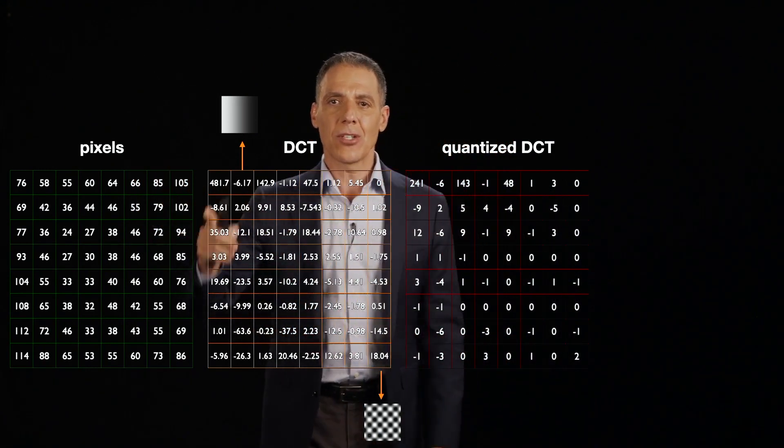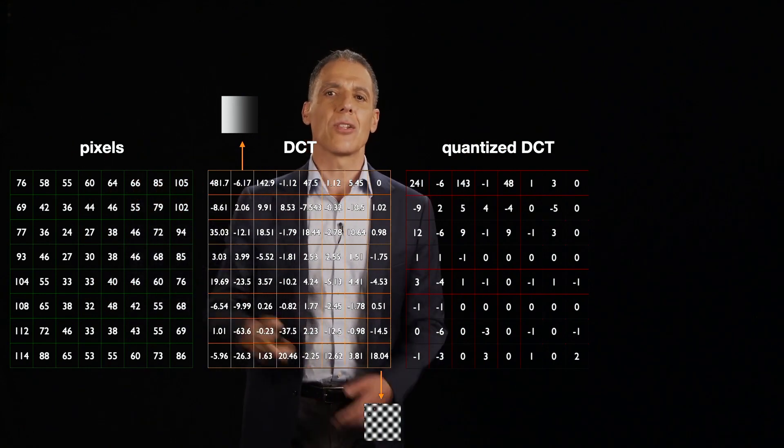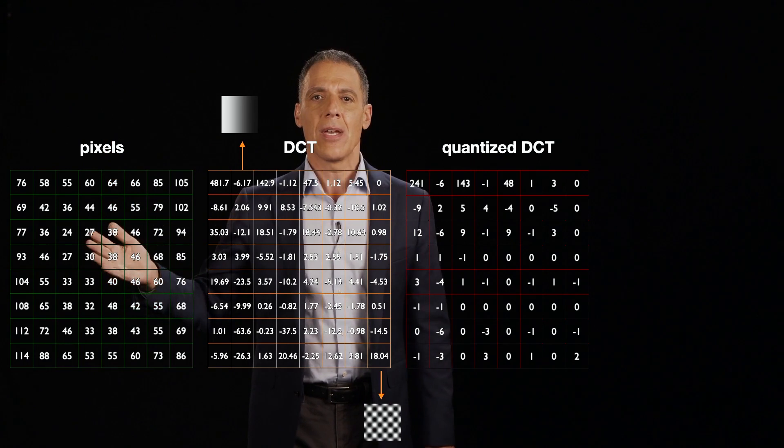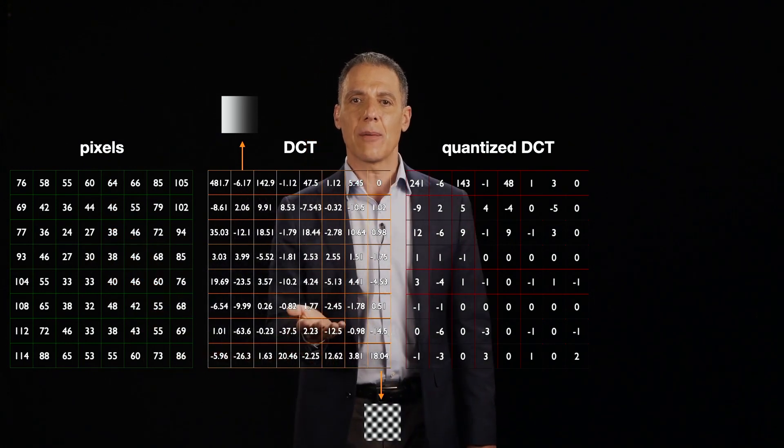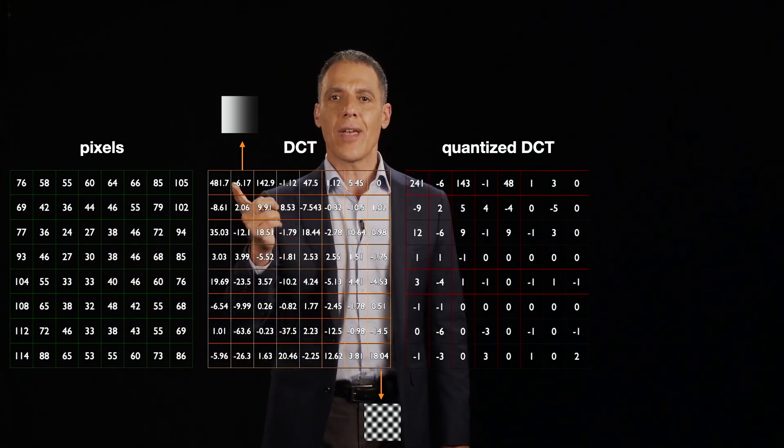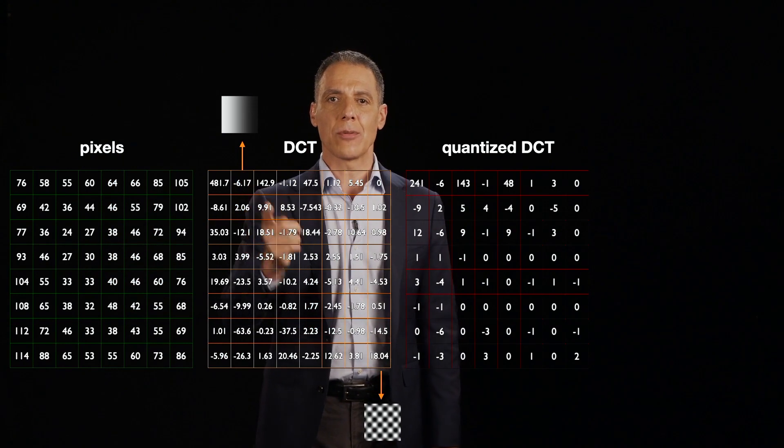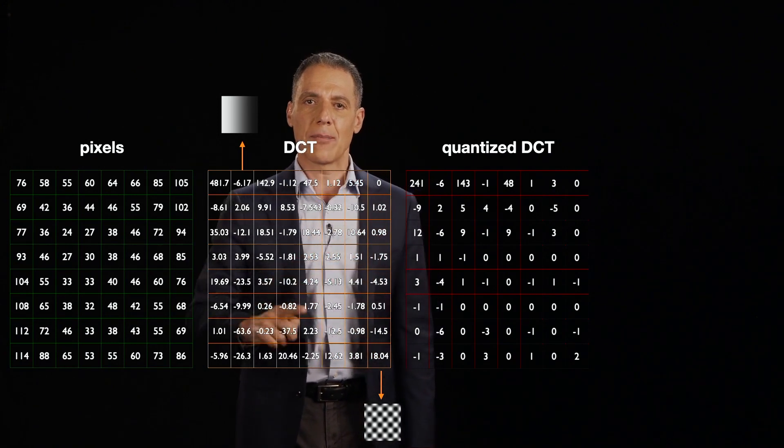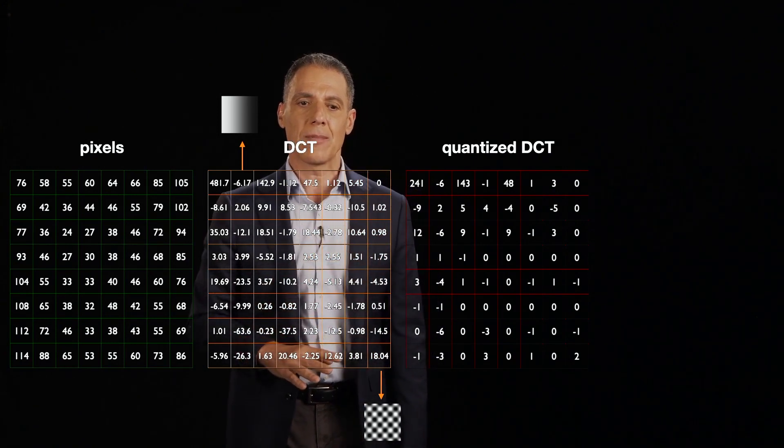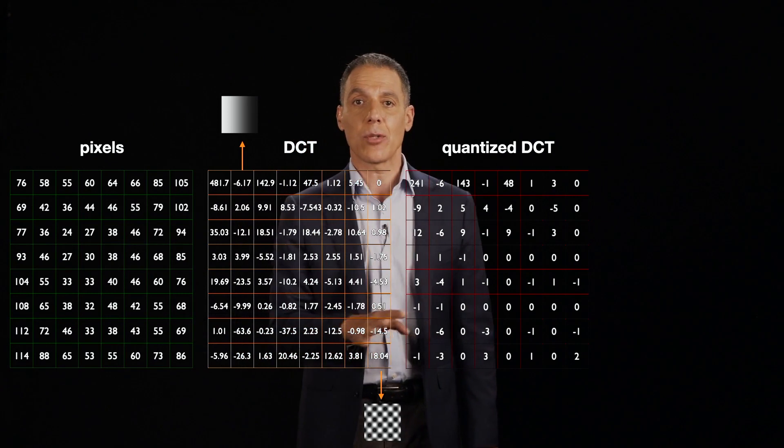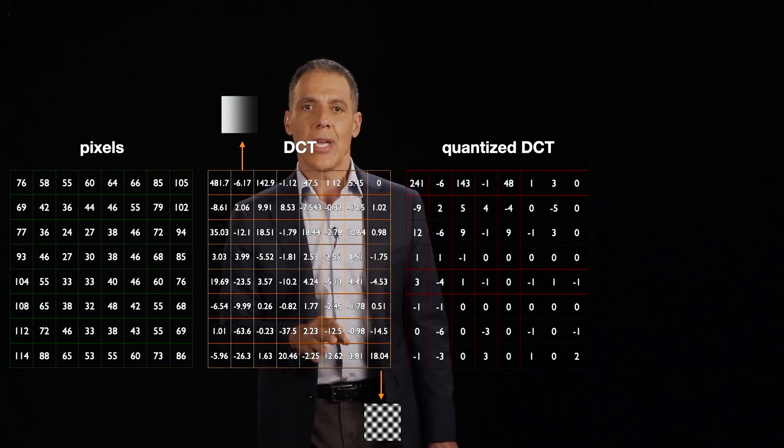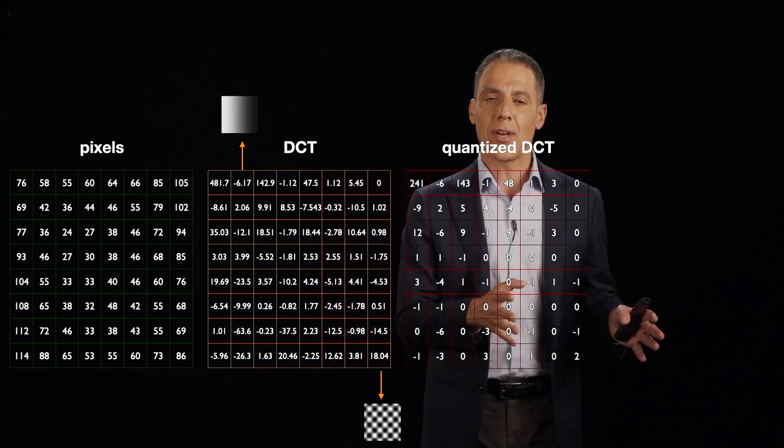We start with pixels. This is a little eight by eight block of, let's say, the luminance channel. The values are integer values between zero and 255. I've done a DCT transform. So this value right here corresponds to the low frequencies. This value right here corresponds to the high frequencies. And going from left to right, top to bottom, it gets higher and higher frequency. Notice these are signed floating point values. Very, very bad for compression. But now what we're going to do is quantize.